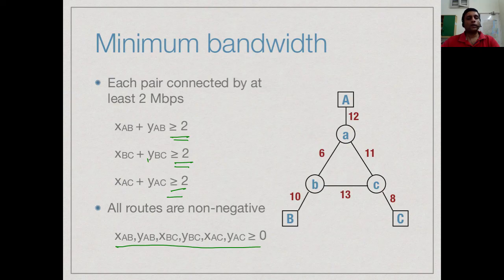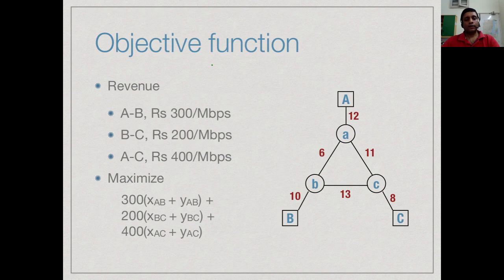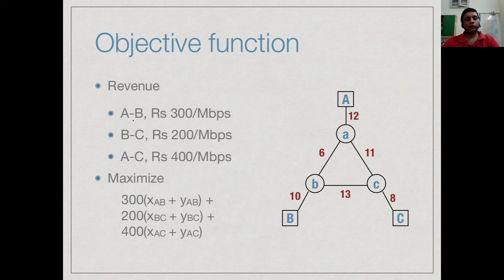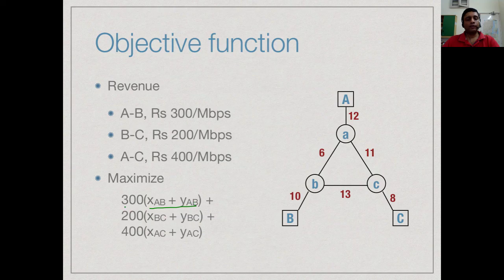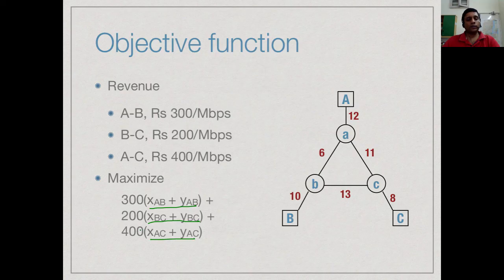This gives us all our constraints. What is our objective function? The objective function is the revenue that we realize. The A to B connection is x_AB + y_AB, this is the total volume that gives us 300. Similarly, x_BC + y_BC gives us 200 and x_AC + y_AC gives us 400.